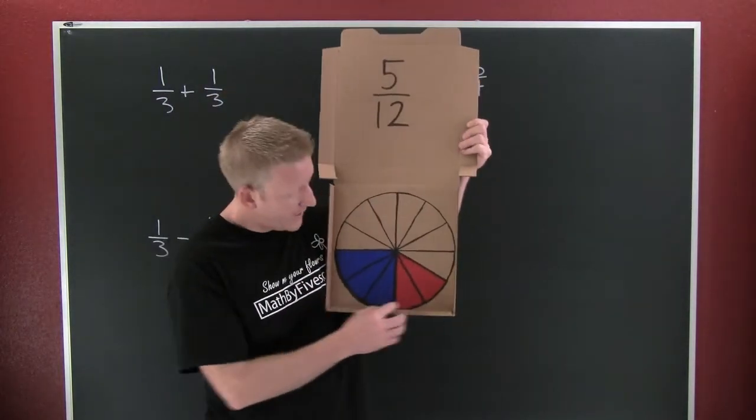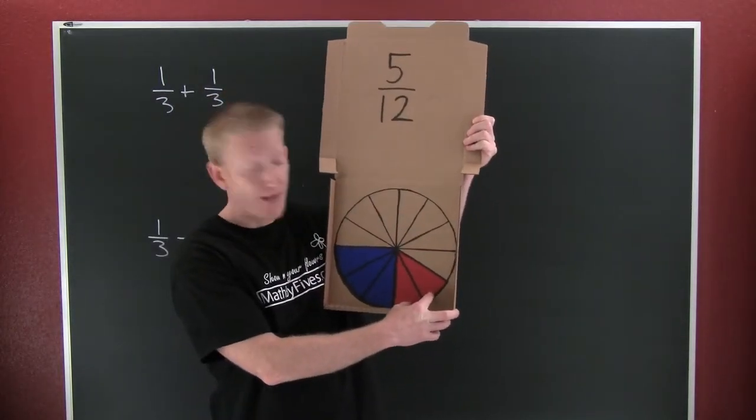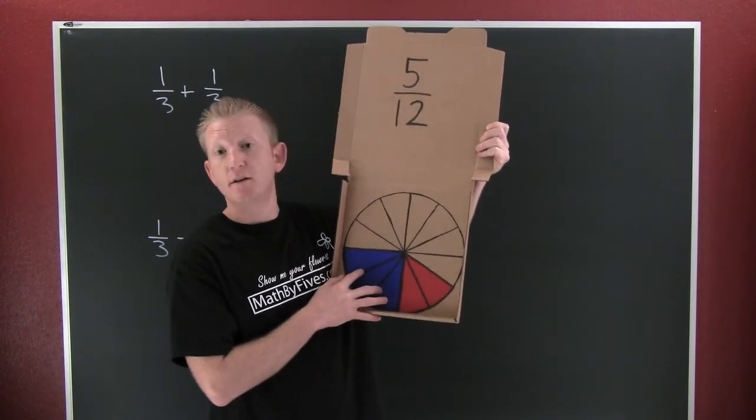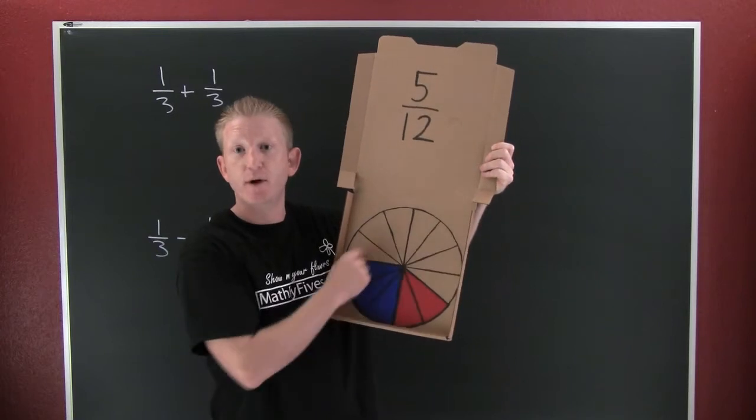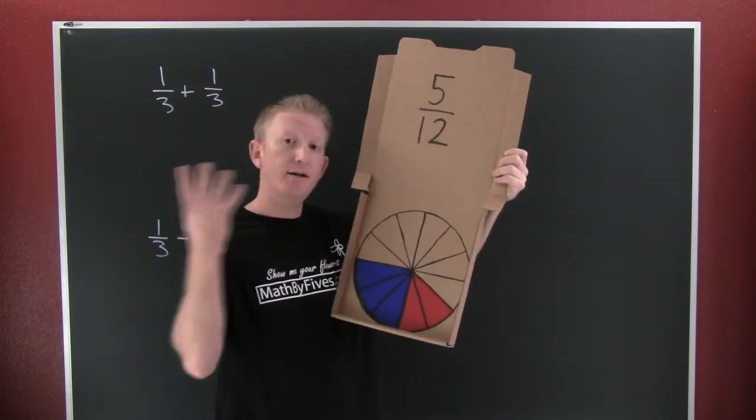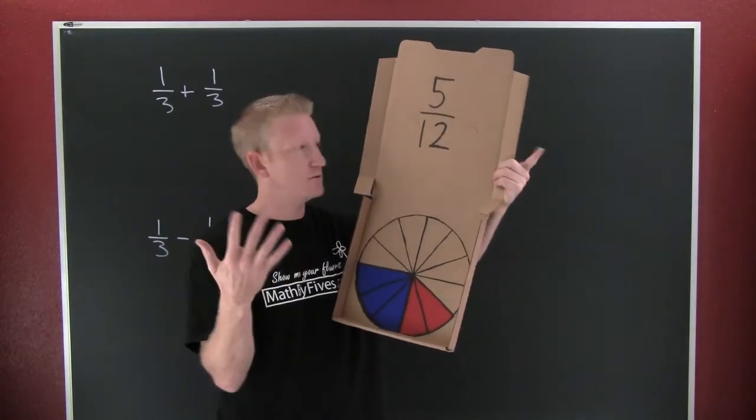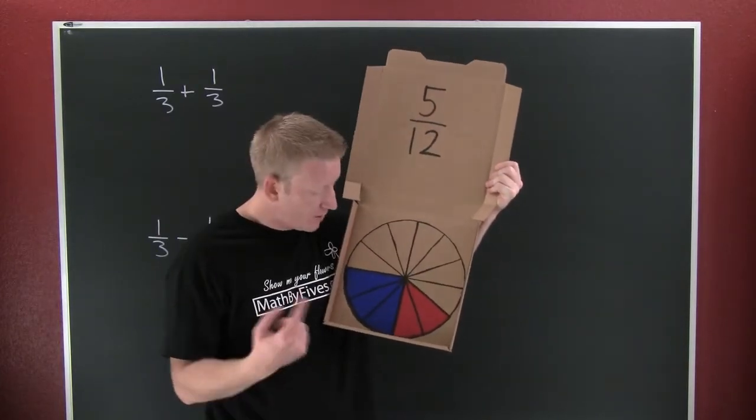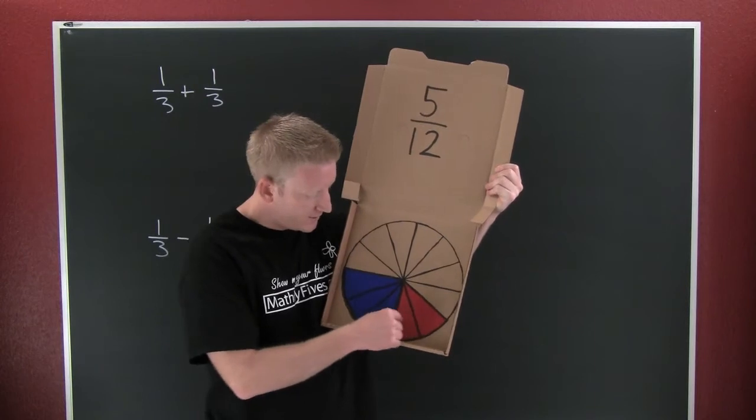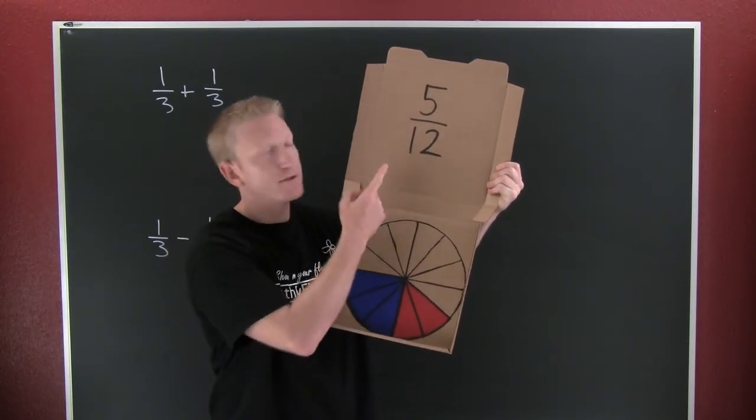So what do you have to do? You have to cut them into the same size pieces. And that cutting them into the same size pieces, that's the action of getting a common denominator. And that's what we have here. Here, what we had to do is we had to cut the red piece into two and the blue piece into three. Why? Because we needed 12s. We had to have our pizza cut into 12s. So then we go and we Adam, we have one, two, three, four, five, 12s.